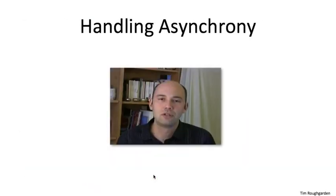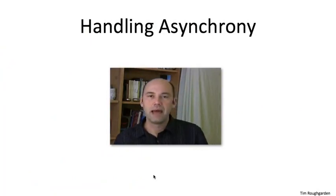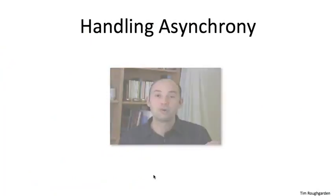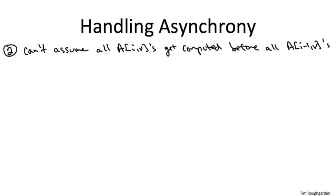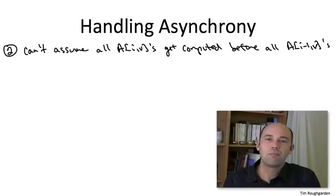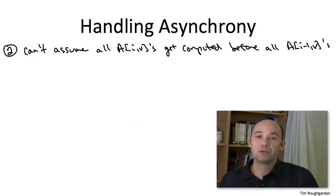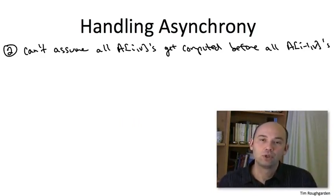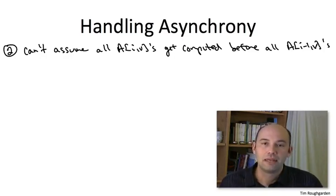So the second issue we need to address is a little more serious, but it's still not too bad. This issue is asynchrony. And what I mean is, if you look back at our basic Bellman Ford algorithm, it was synchronous in the following sense. We were careful to structure the outer iteration of the for loop so that all of the subproblems corresponding to value I minus one gets solved before any of the subproblems with index I.